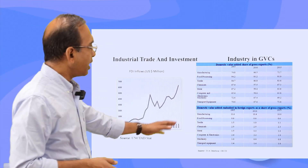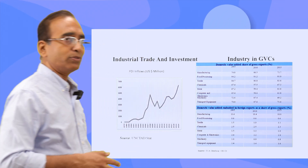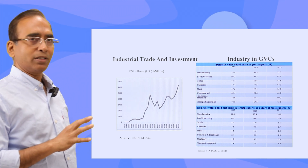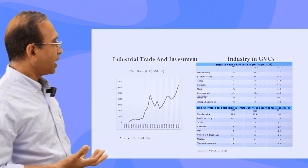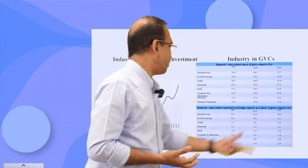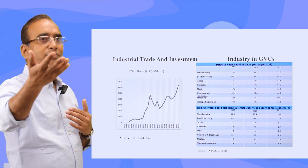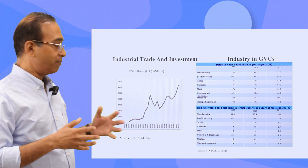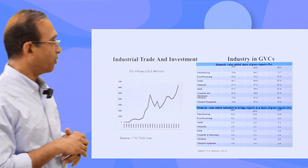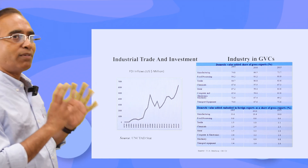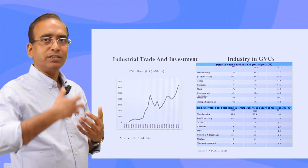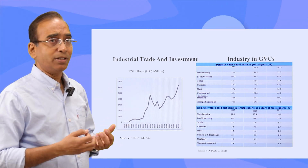The forward linkage refers to domestic value added embodied in foreign exports — in other countries' exports, what is the contribution of India's value addition? In 2015, it is around 10–11%. So in any country's manufacturing exports, India's contribution is around 10–11%, which is a quite impressive number. This data is taken from the TiVA database of the OECD, and it provides a new indicator of how our industry is getting matured and how our industry is getting involved in other countries' production systems and their exports.